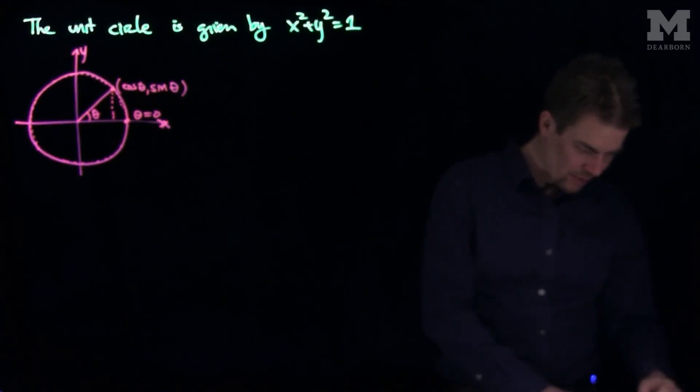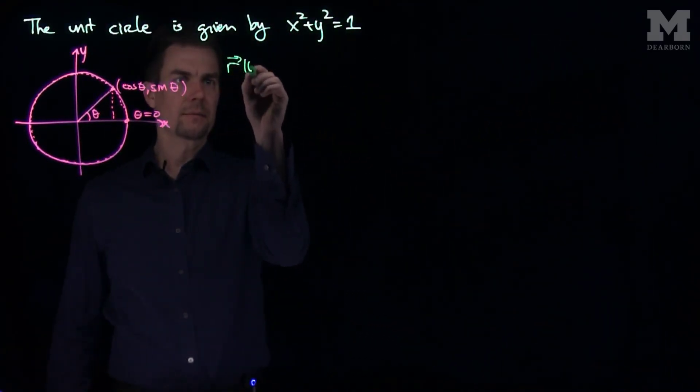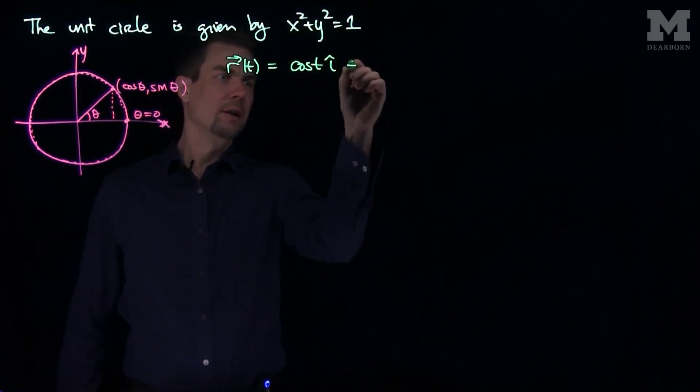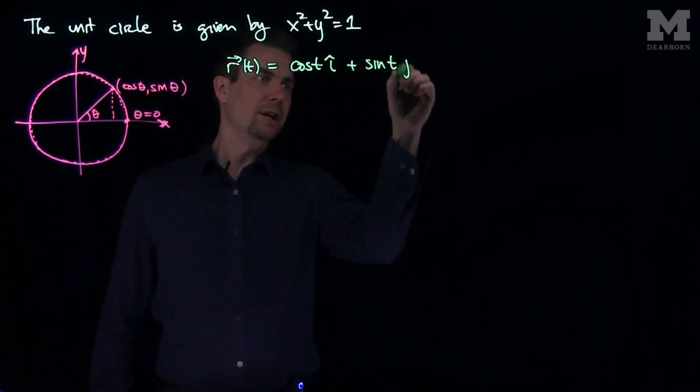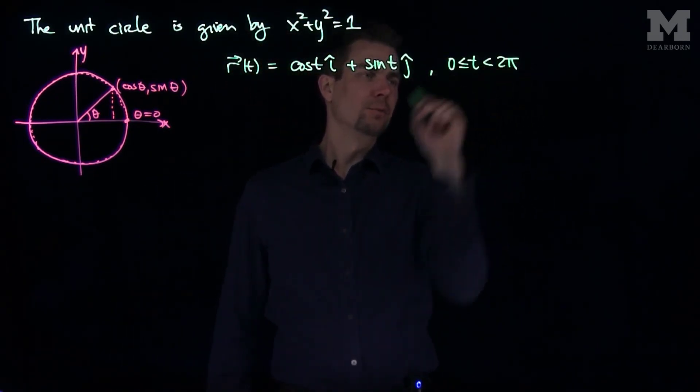So here is our parameterization of the unit circle. Our parameterization of the unit circle is r(t) = cos(t) i hat plus sin(t) j hat, and we'll say that t goes between 0 and 2π.